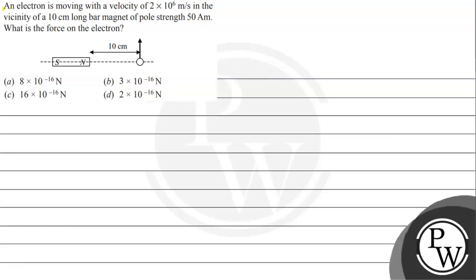Hello, let's read the given question. The question says an electron is moving with a velocity of 2 × 10^6 meter per second in the vicinity of a 10 centimeter long bar magnet of pole strength 50 ampere meter. What is the force on the electron?